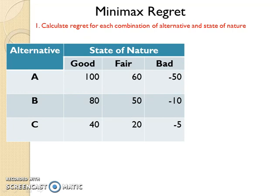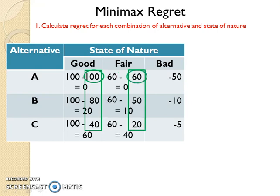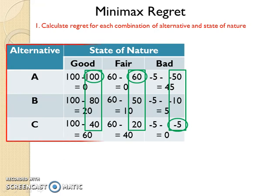To calculate regret, look at each column, identify the highest payoff, and then subtract each payoff in that column from the highest payoff. For example, for the first column, the highest payoff is 100, so subtract each payoff in the first column from 100. Do the same thing for the other columns. This table is now called the Regret table.